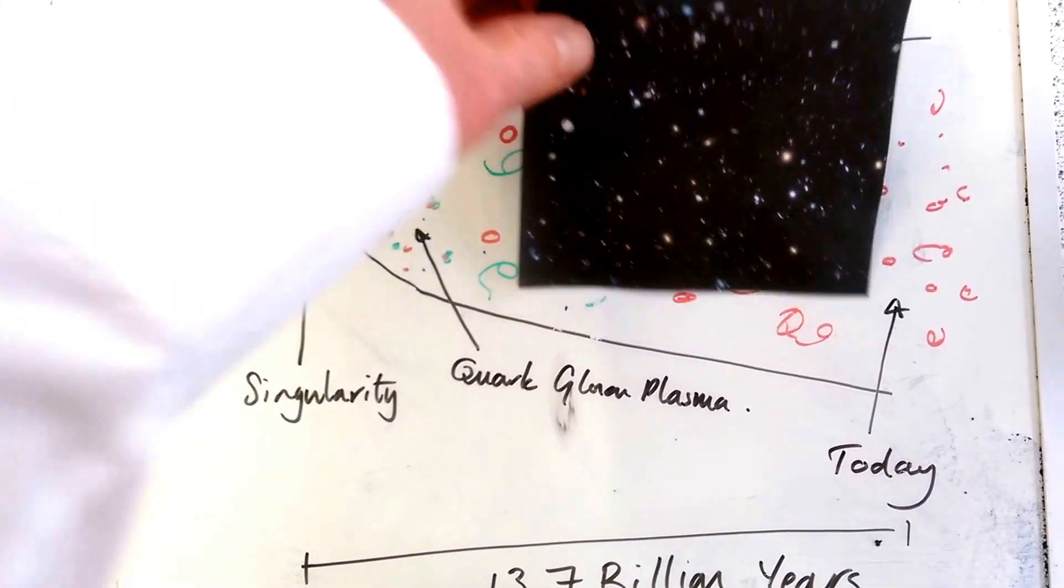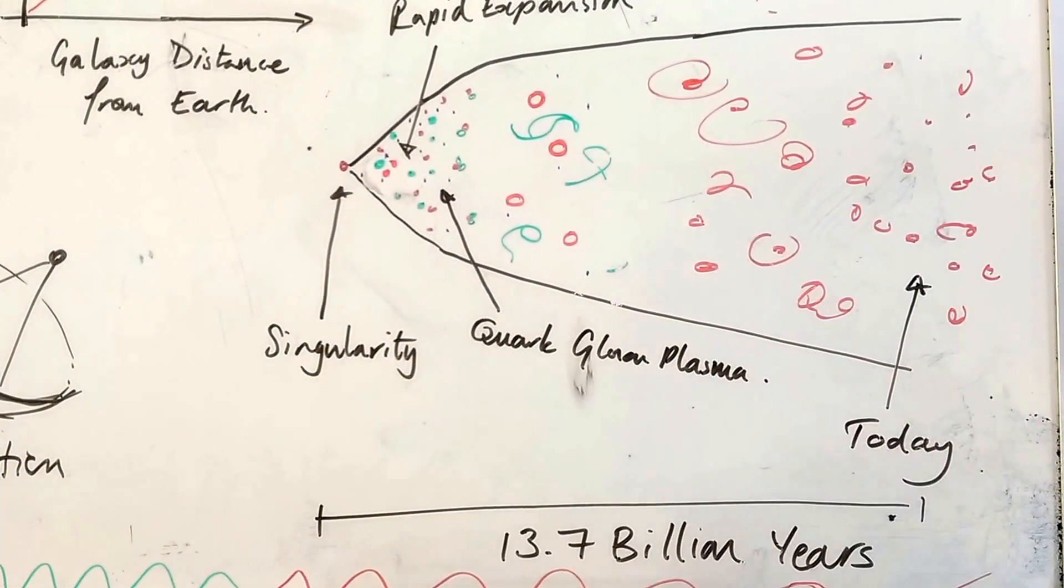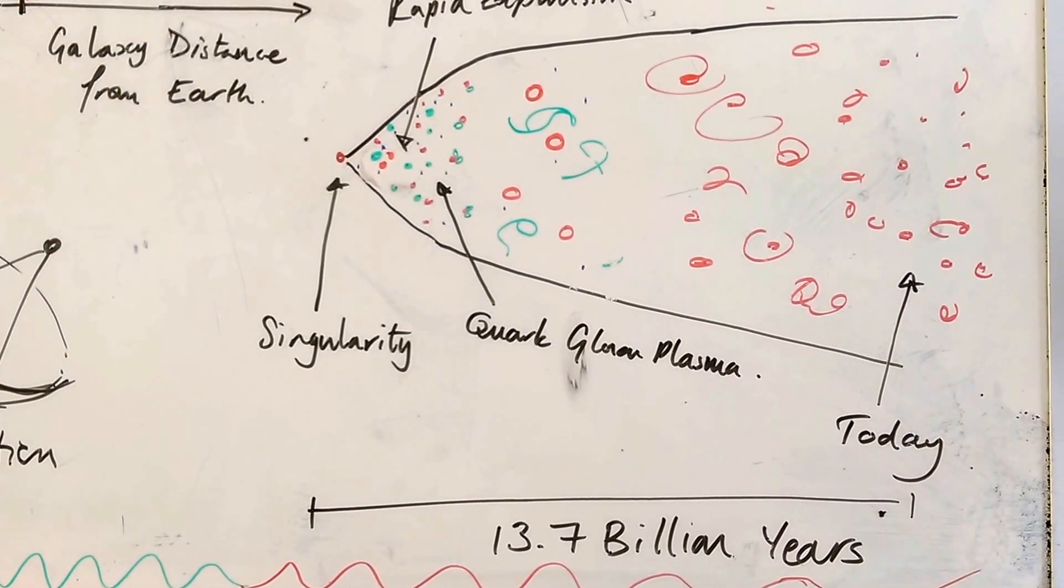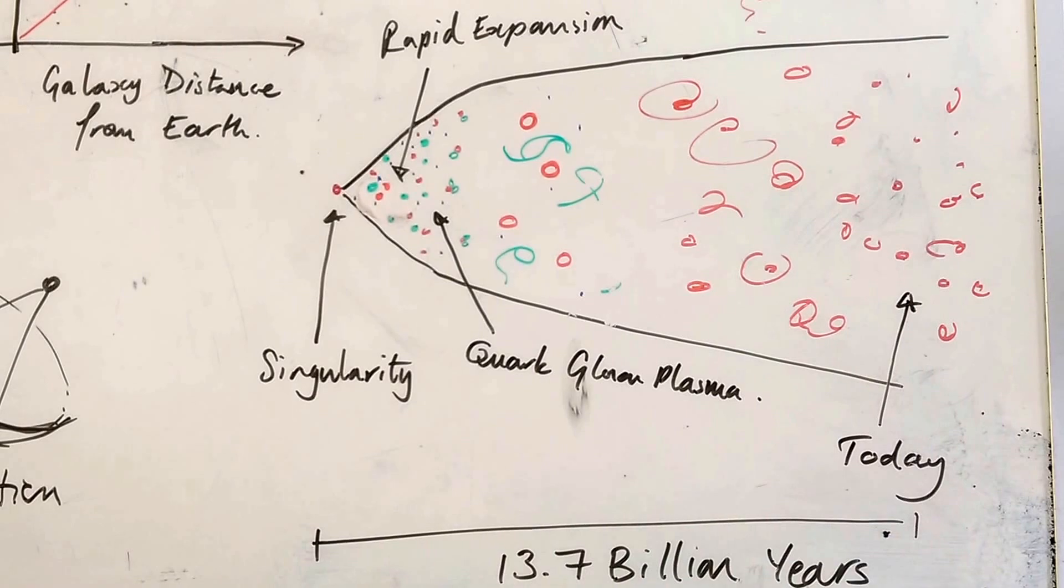So, this is how we know that the universe, from the singularity to today, is going to be 13.7 billion years old. That's at least our best estimate now.